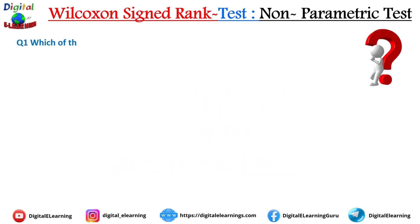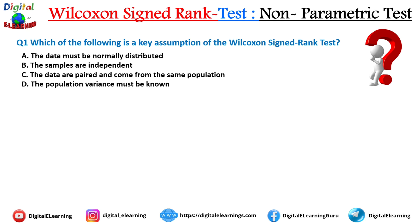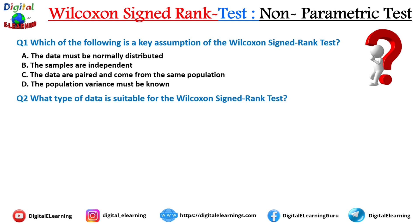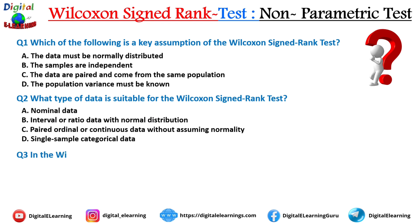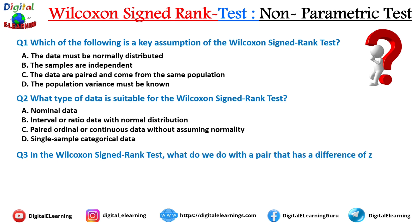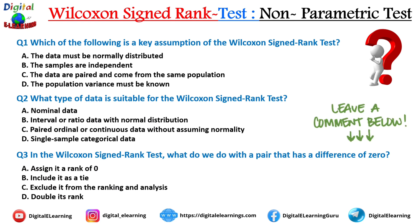Read the questions and leave your answers in the comment section below. Question 1: Which of the following is a key assumption of Wilcoxon's signed rank test? Options: A) Data must be normally distributed. B) Samples are independent. C) Data are paired and come from the same population. D) Population variance must be known. Question 2: What type of data is suitable for Wilcoxon's signed rank test? Options: A) Nominal data. B) Interval or ratio data with normal distribution. C) Paired data or continuous data without assuming normality. D) Single sample categorical data. Question 3: In the Wilcoxon's signed rank test, what do we do with pairs that have a difference of 0? Options: A) Assign it a rank of 0. B) Include it as a tie. C) Exclude it from the ranking and the analysis. D) Double its rank.